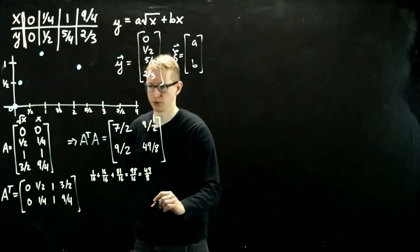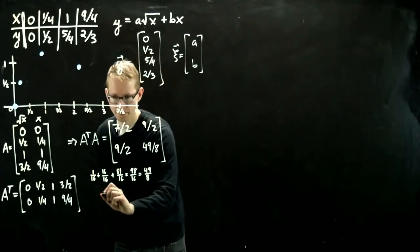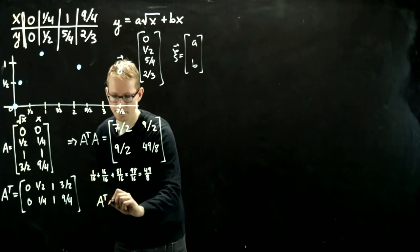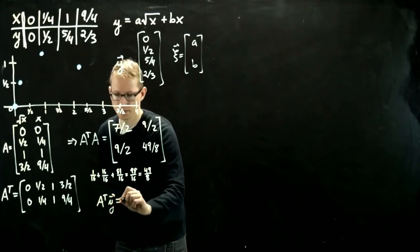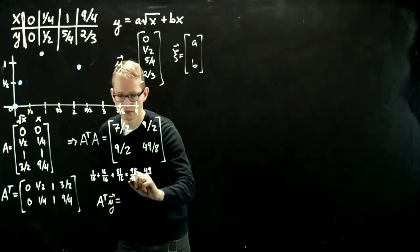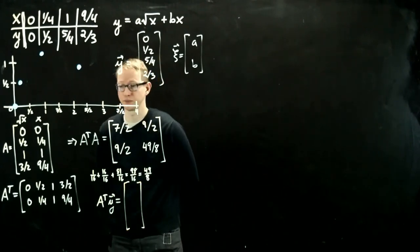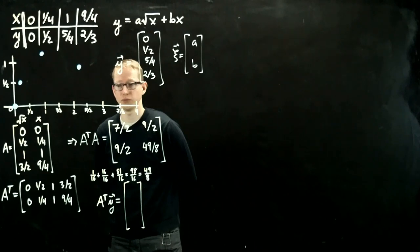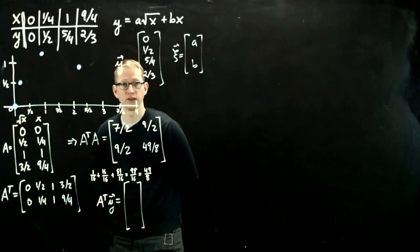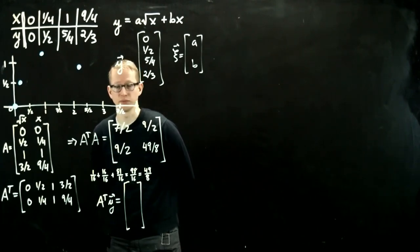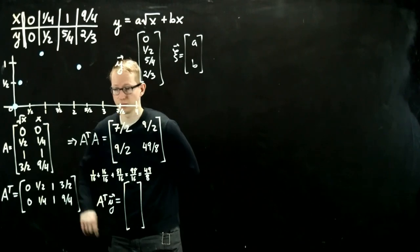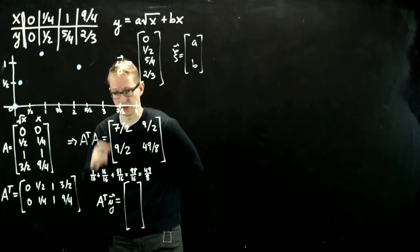Now let's compute A transpose Y. So we'll take this matrix with this one. It's going to be simple. It's a fourth plus 5 fourths, which is 6 fourths, plus, oh, those seem to cancel, plus 1. So 6 fourths plus 1 is 10 fourths, which is 5 halves.